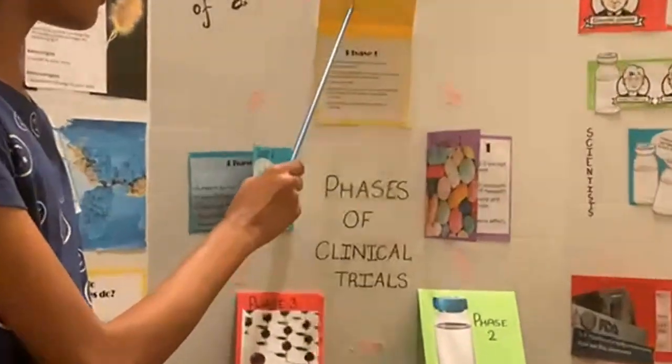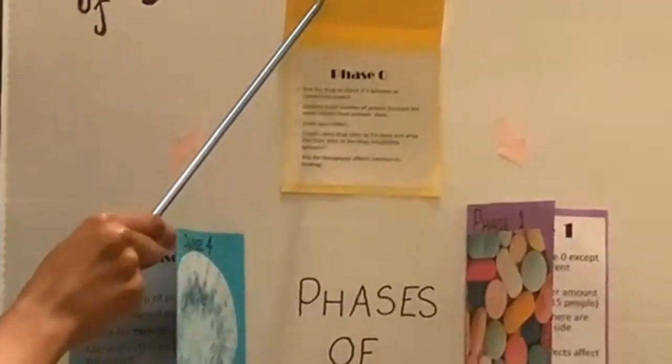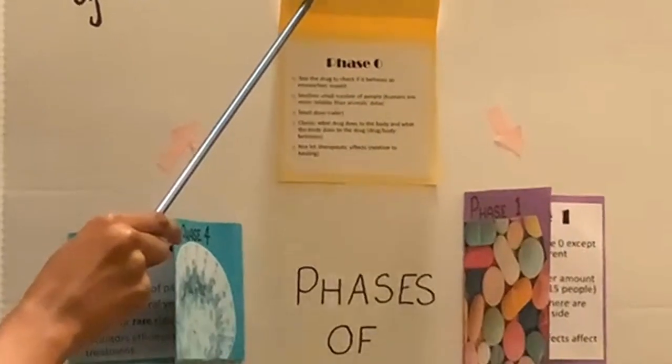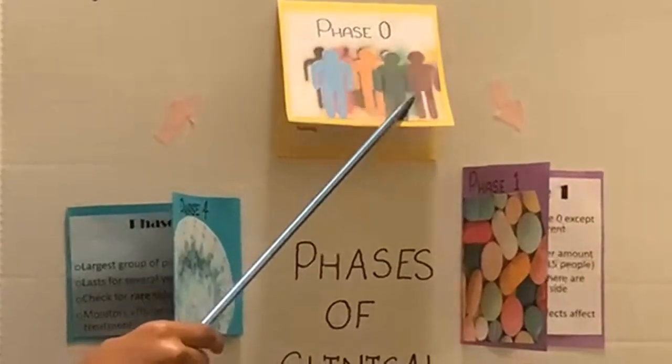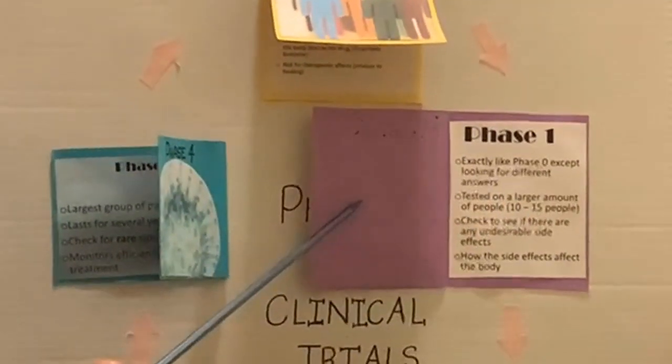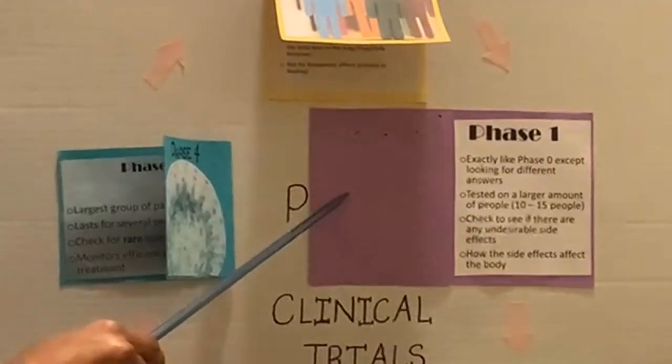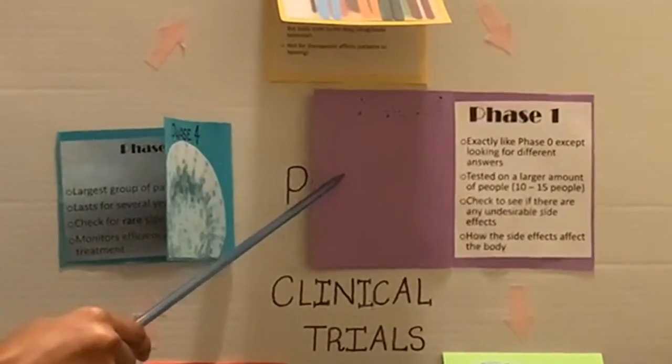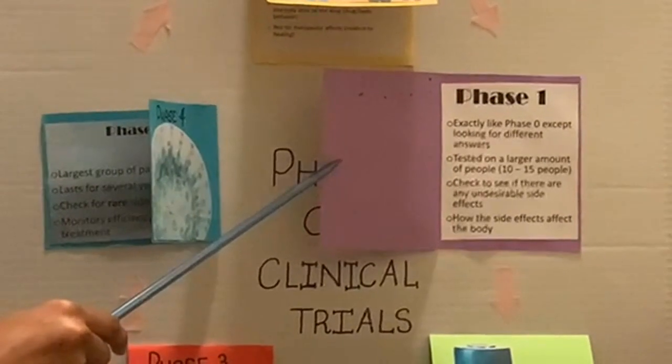All vaccines start off at phase zero. This involves a small number of people and it checks what the drug does to the body. Then the vaccine moves on to phase one. It's tested on a larger amount of people, around 10 to 15, and it's to check to see if there are any undesirable side effects.